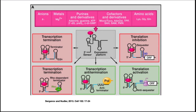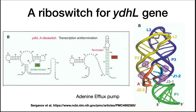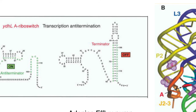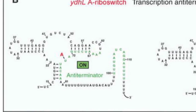Different riboswitches can block transcription, allow transcription, block translation, or allow translation. A second example of a riboswitch controls the expression of an adenine efflux pump, YDHL. If the concentration of adenine gets too high, it can be toxic for the cell, so a pump is synthesized to move it out of the cell. The A riboswitch is found in the YDHL gene. When adenine is absent, the secondary structure of the messenger RNA of YDHL forms a stem-loop structure — shown in the off part of the figure — which is a Rho-dependent terminator, shutting off transcription in the absence of adenine. If adenine is present, it binds to the messenger RNA and forms a different secondary structure, blocking the formation of the terminator.